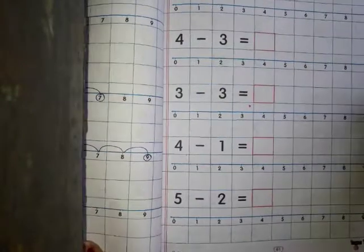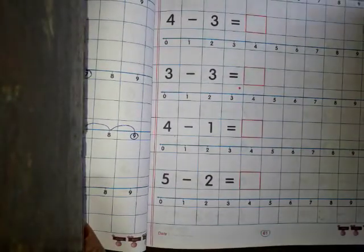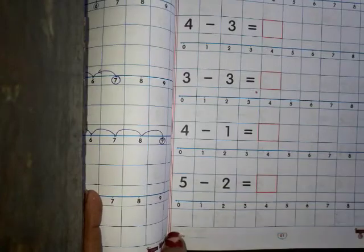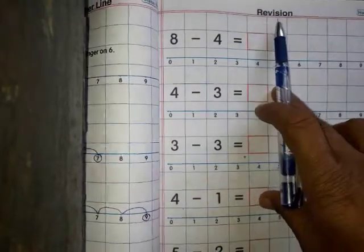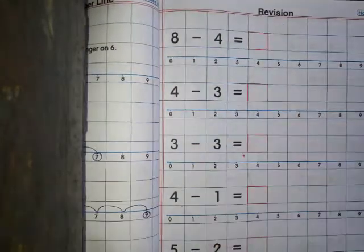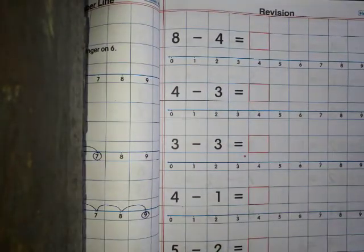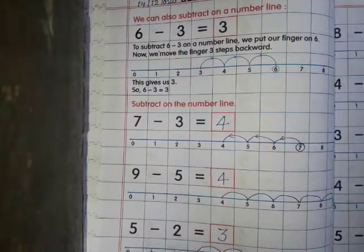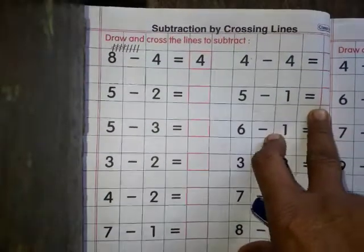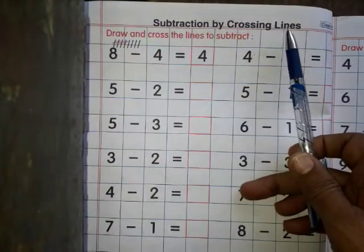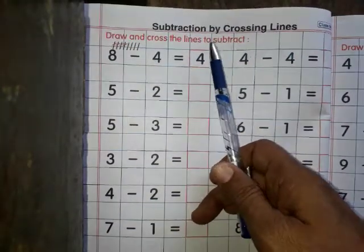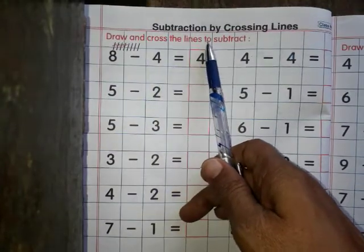Now next page — page number 61. आपको page number 61 अपने से revision करना है, यह revision यहां दिया हुआ है। मैंने page number 60 समझाया, इसी प्रकार से आपको 61 revision करना है। अब हम देखेंगे page number 62 — subtraction by crossing lines. हम subtract करेंगे line को cross करके। Draw and cross the line to subtract.